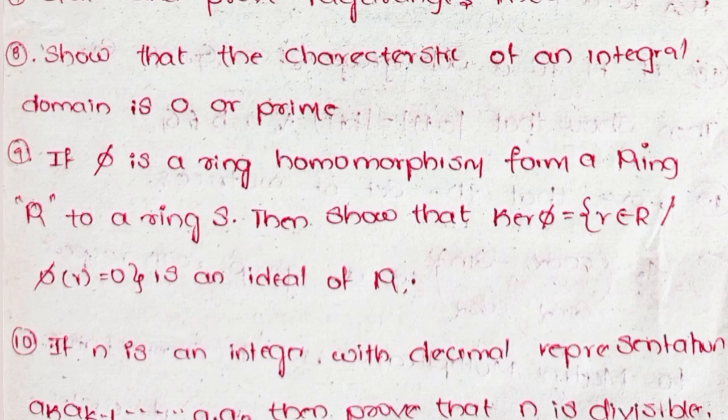Eighth, show that the characteristic of an integral domain is 0 or prime. Ninth, if pi is a ring homomorphism from a ring R to a ring S, then show that the kernel of pi — that is, pi(r) = 0 — is an ideal of R.